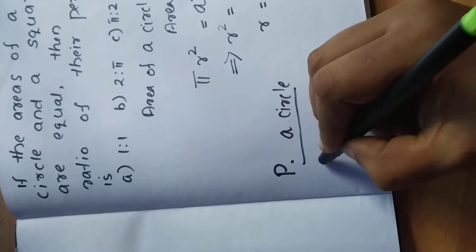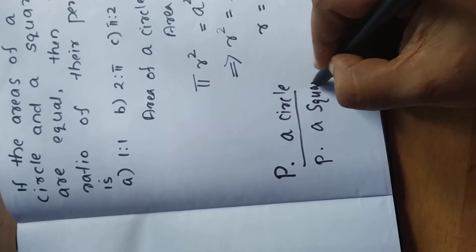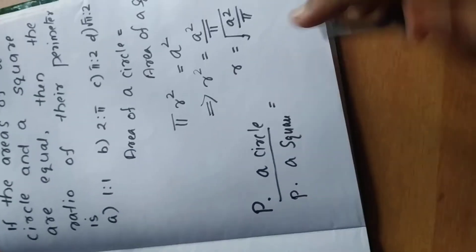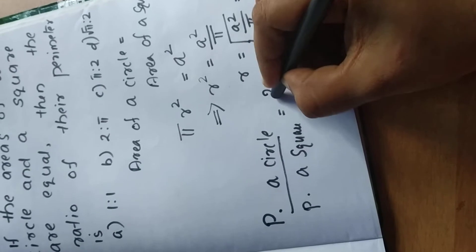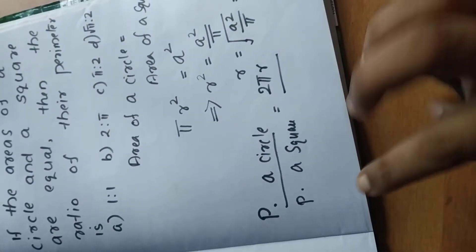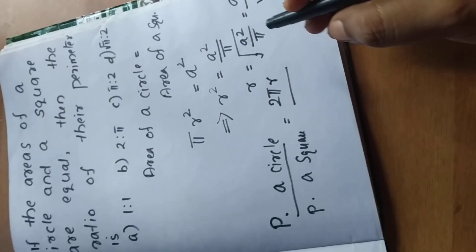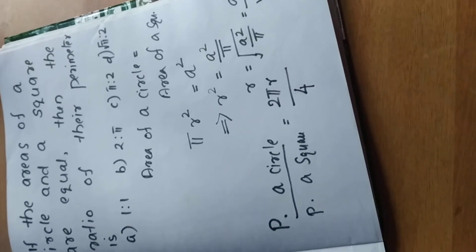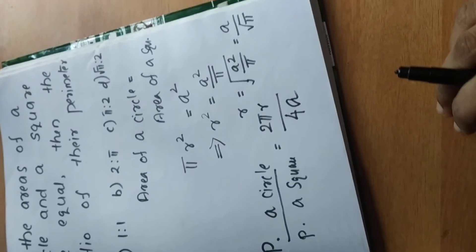Ratio means division — perimeter of a circle divided by perimeter of a square. Perimeter of a circle is 2πr, divided by perimeter of a square, which is 4 times the side. Taking the side as a, that is 4a.